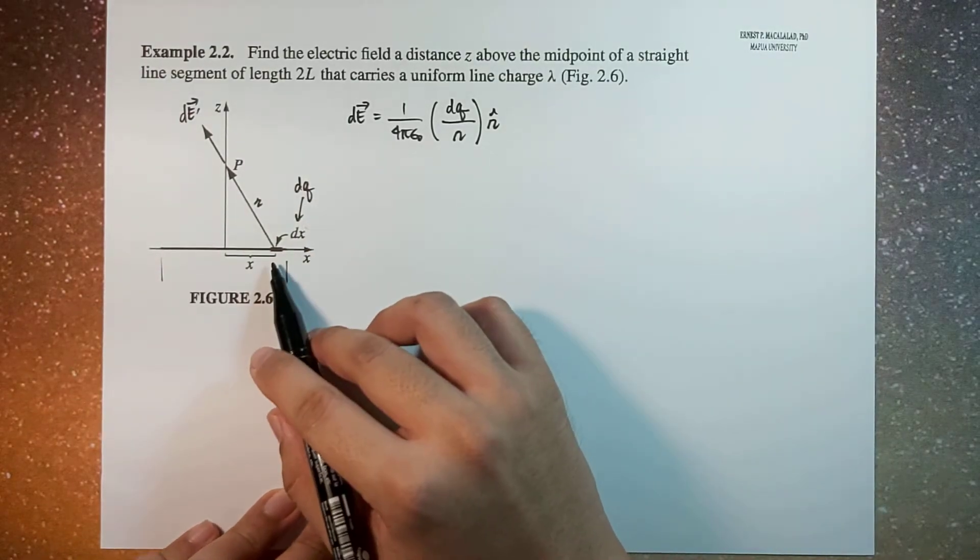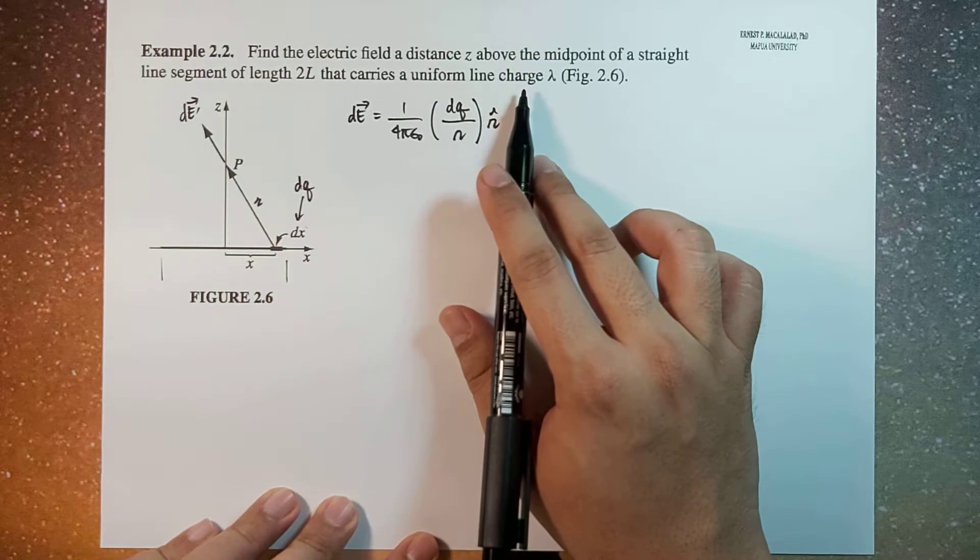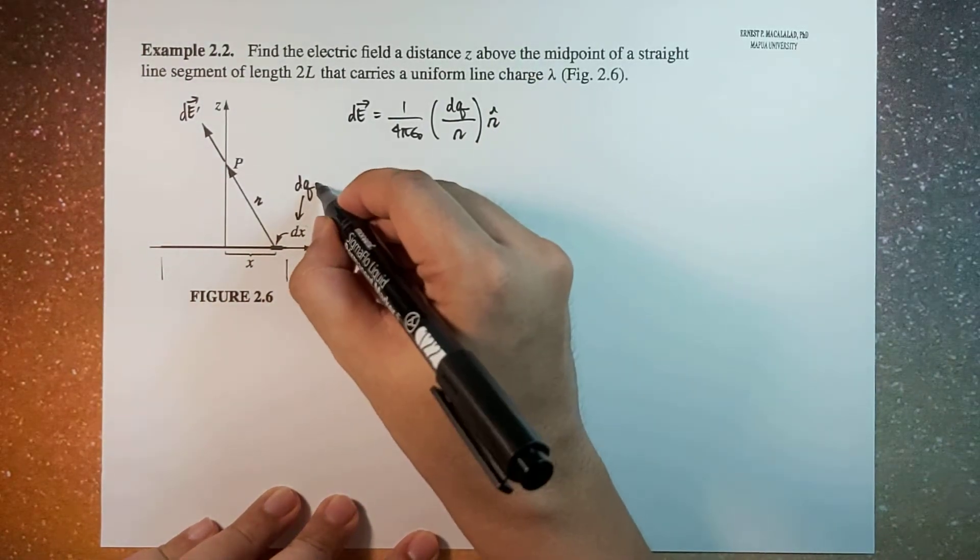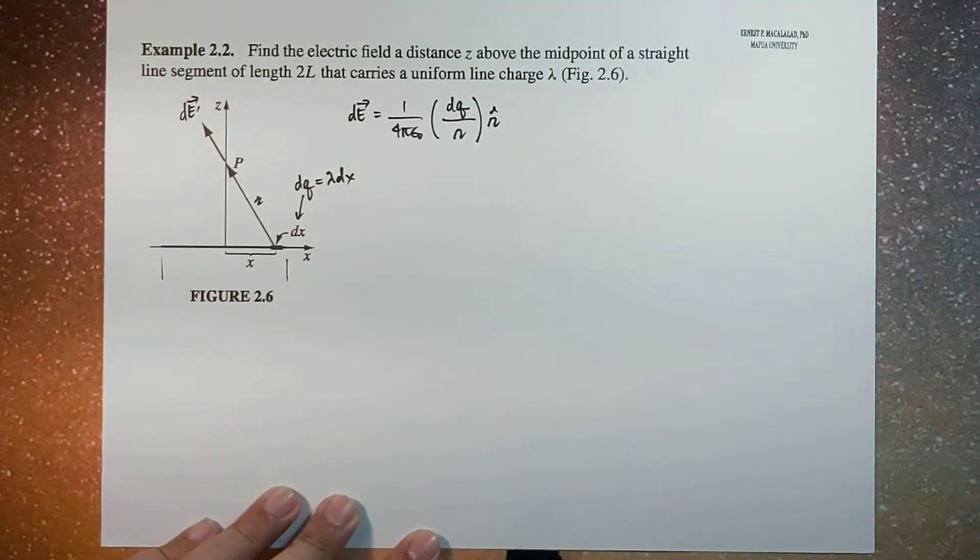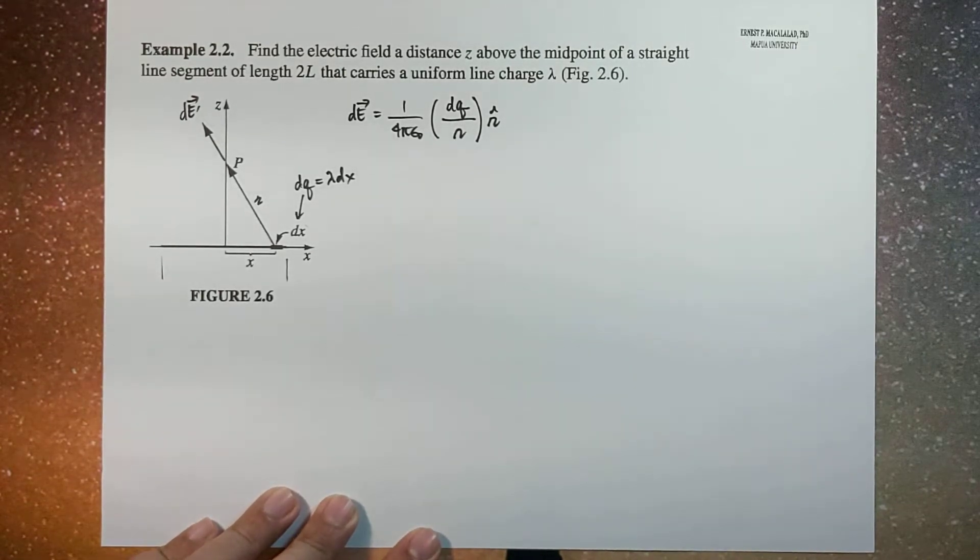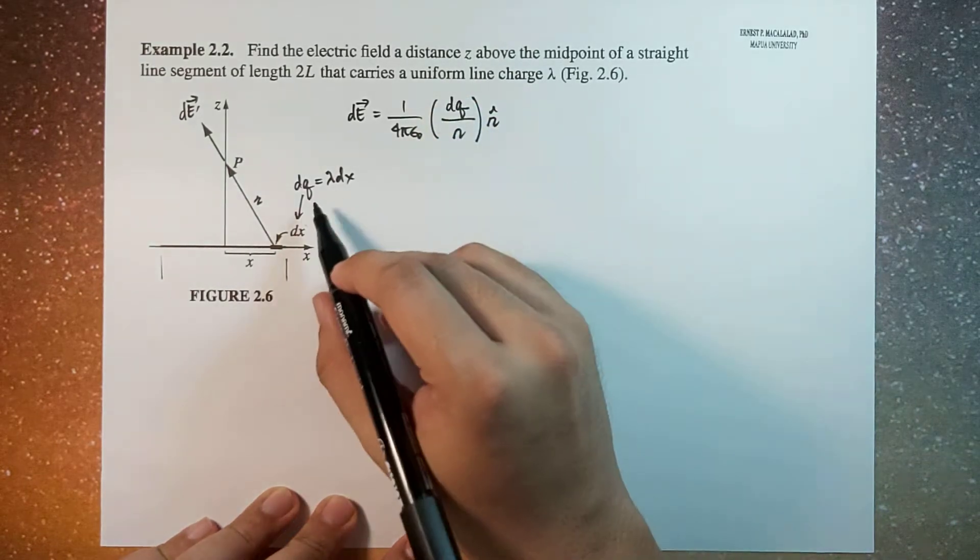Now, here we take note that because the line charge has a uniform density lambda, that means dQ will be equal to lambda times the infinitesimal length dx. So this dQ becomes lambda dx.